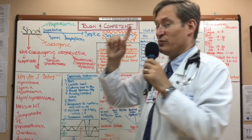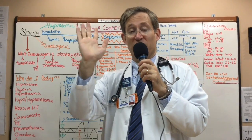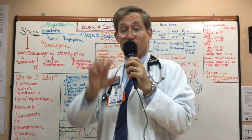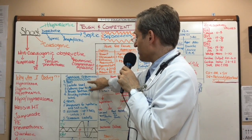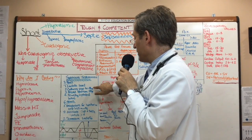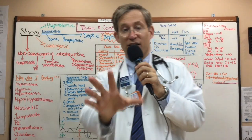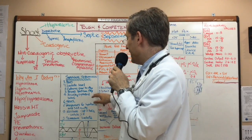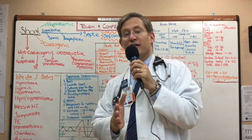We have a sepsis order set — type 'sepsis' into Sunrise Clinical Manager and it will pop up. By three hours, you should check a lactate level, get cultures prior to antibiotics, start broad-spectrum antibiotics — pre-selected antibiotics are available in the order set — and give at least a 30 ml per kg crystalloid bolus initially.